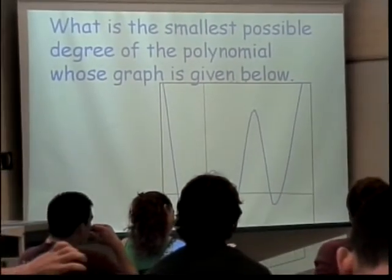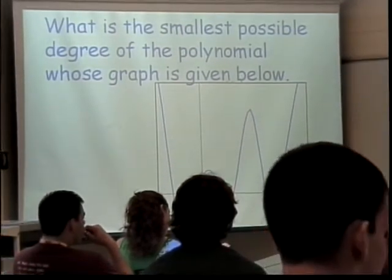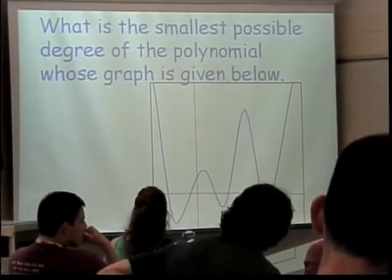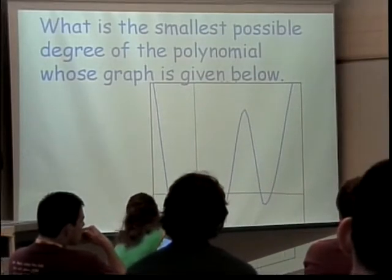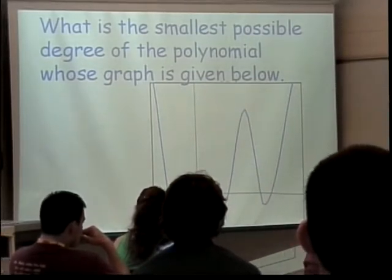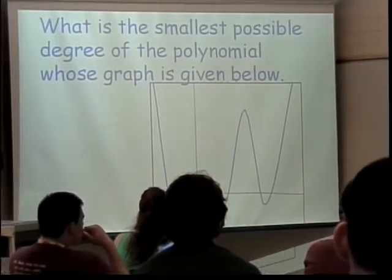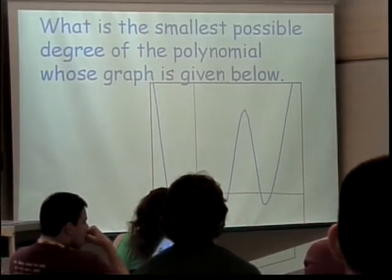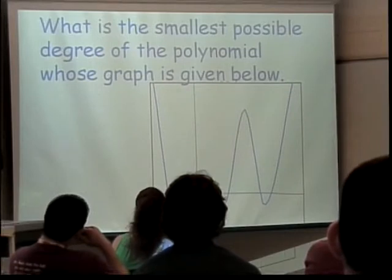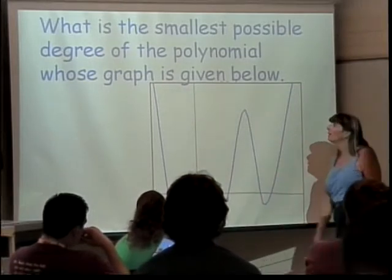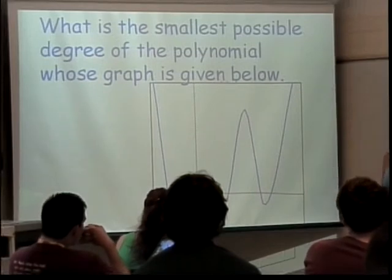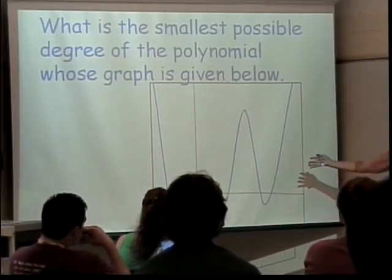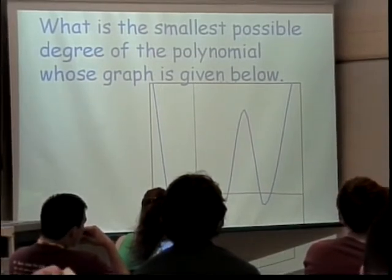But instead we're going to look at a really quick thing that we can do fast. Here's a graph. Let's start with what is the graph. Does it have an even or an odd degree? Even. How do you know it's even? Because they're both going up. Because they're both going up. The both ends are going in the same direction. Now the question that this asks is what is the smallest possible degree of the polynomial that we have the graph for here, and how do you know?